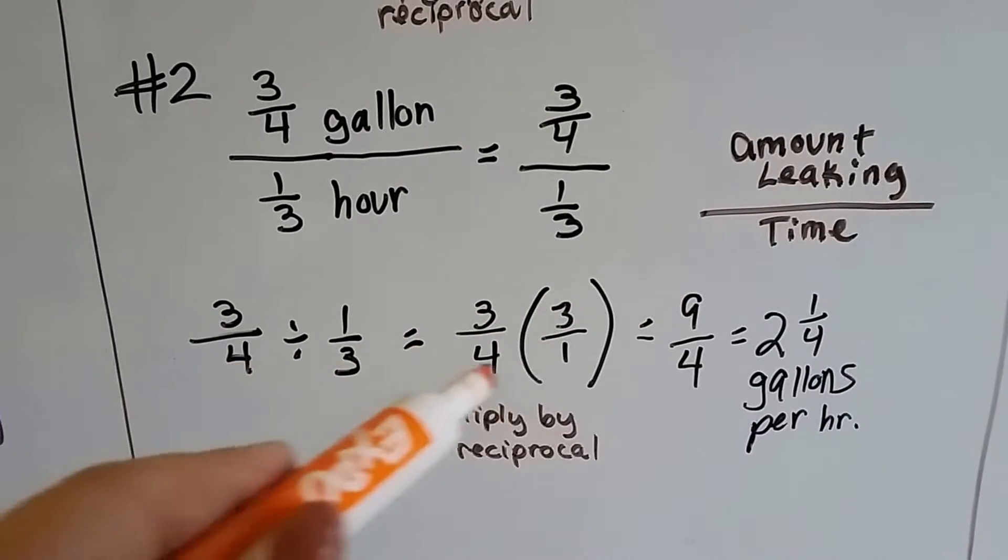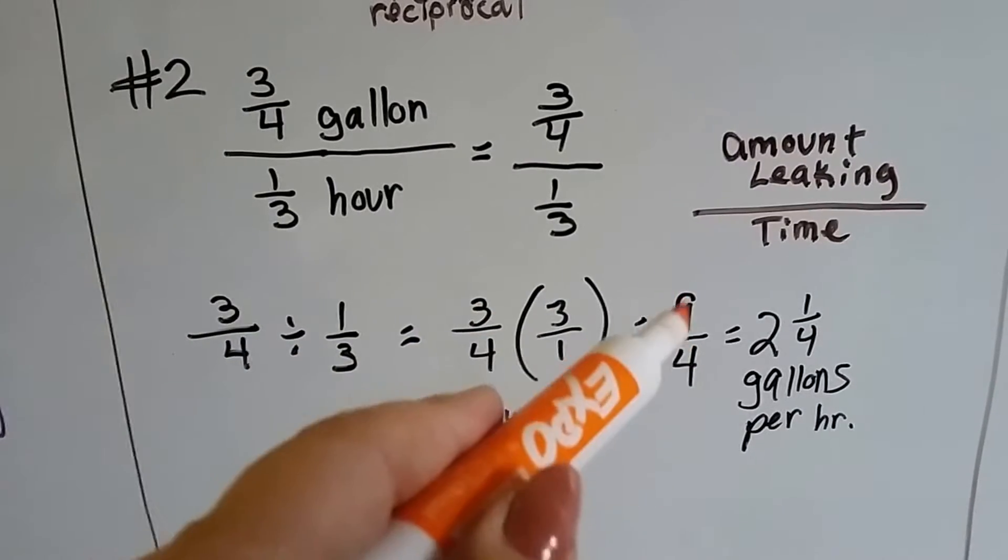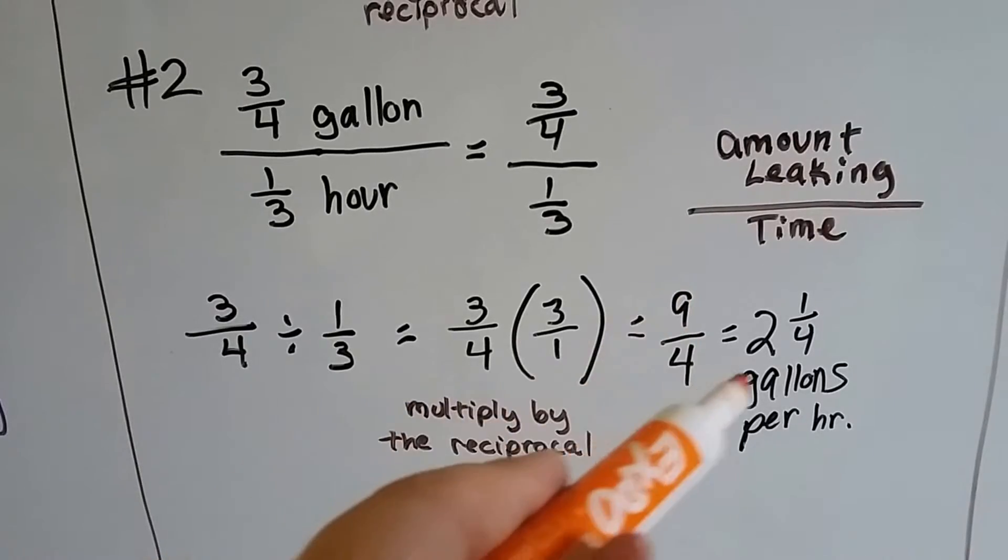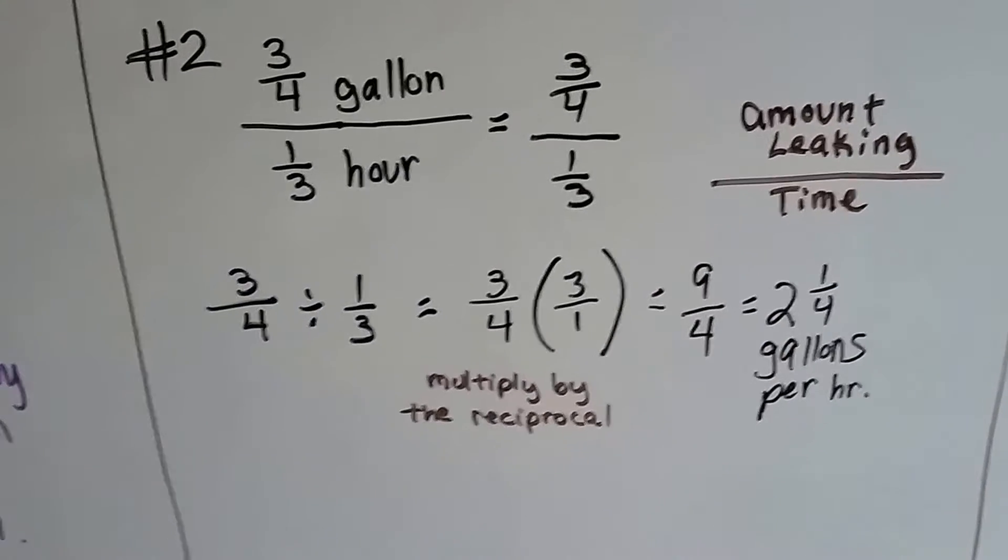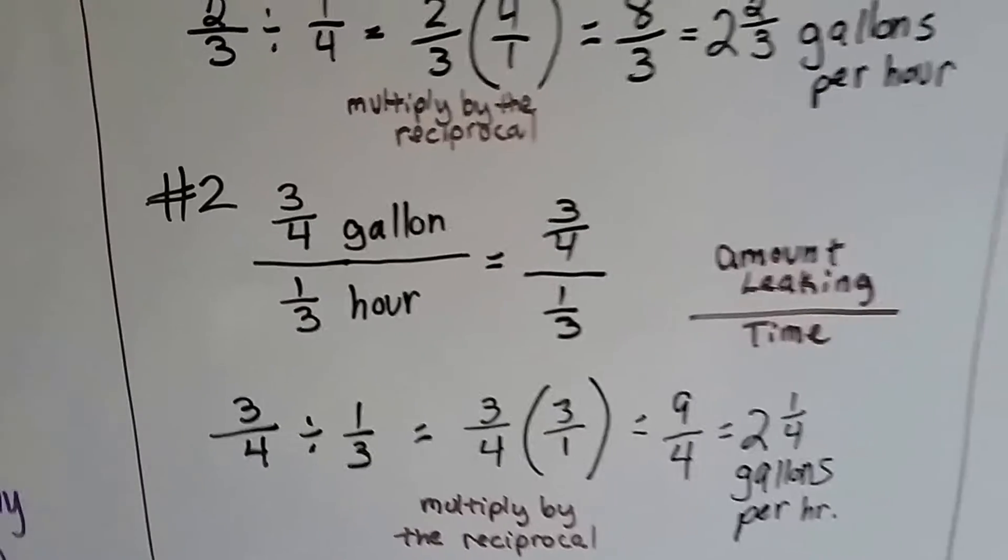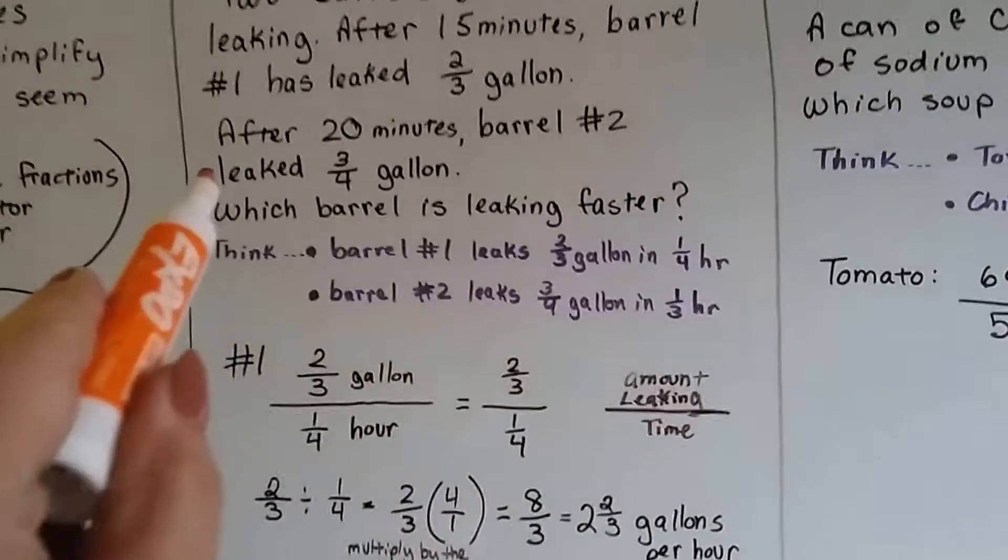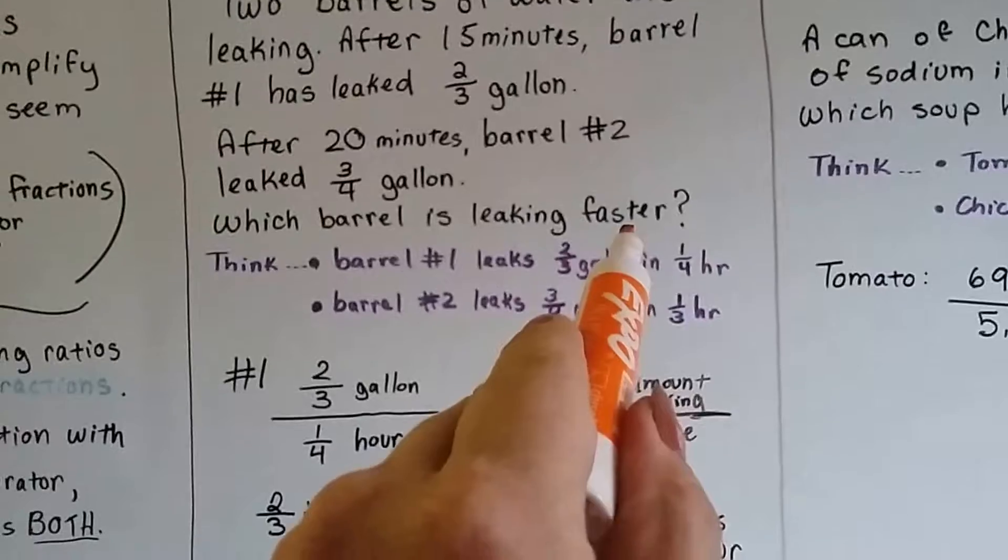Three times three is nine. Four times one is four. And we simplify it. Four goes into nine two times with one-fourth left over. So it's two and one-fourth gallons per hour. So which one is leaking faster is the question. Which barrel is leaking faster?